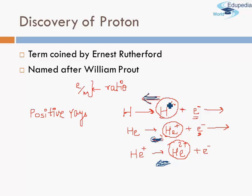Positive rays are some form of the H⁺ atom, and even today protons are sometimes still denoted by the symbol H⁺. After this, several experiments were made to calculate the exact values of charge and mass of the proton.